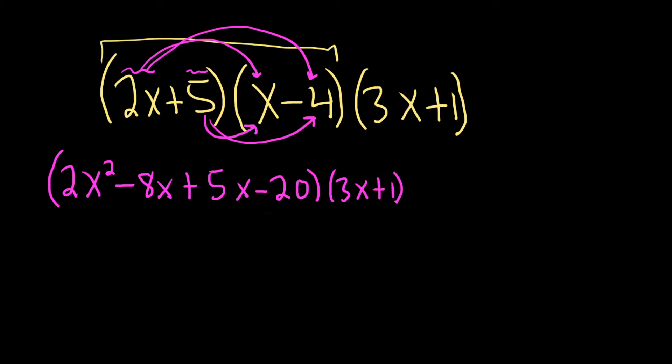Looks like we can combine like terms, which is really nice. So this will be 2x squared. Minus 8x plus 5x is minus 3x. And we have a minus 20. And then here we have 3x plus 1.